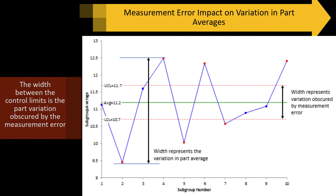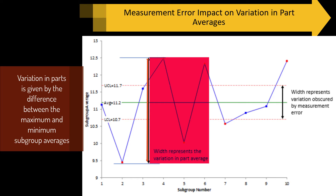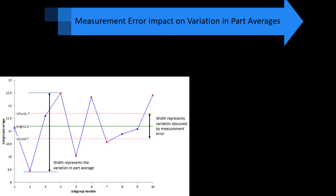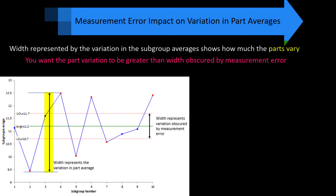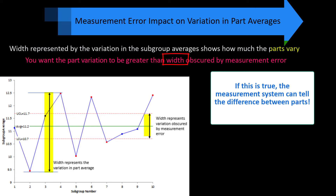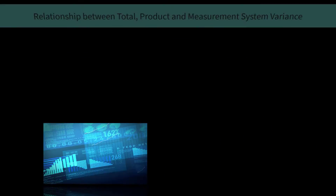The width between the control limits represents the part variation obscured by measurement error — all the variation seen between the control limits is due to measurement error. Variation in the parts is given by the difference in the maximum and minimum subgroup averages. We're comparing the part variation to the measurement system variation. The width represented by the variation of subgroup averages shows how the parts vary, and you want that part variation to be greater than the width obscured by measurement error. In this example, the measurement system can tell the difference between the parts because part variation is much larger than measurement system variation.